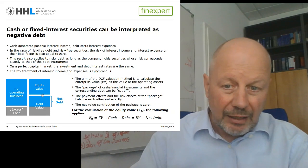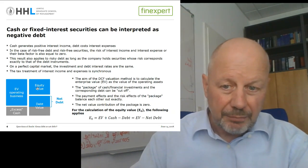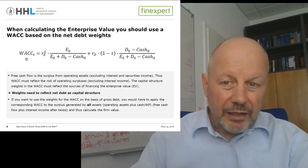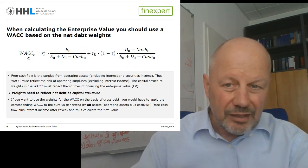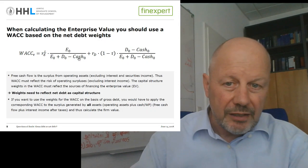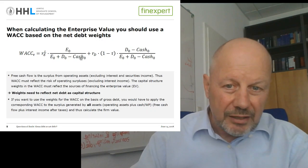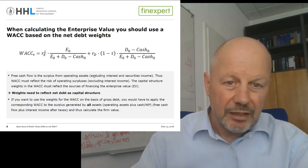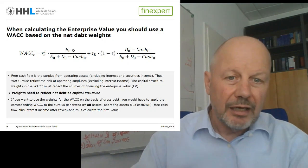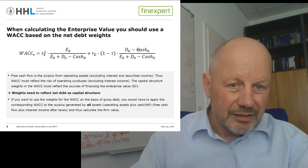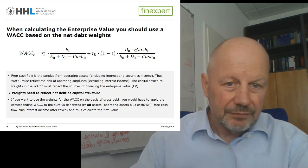So that means that the capital structure we apply on our enterprise value is equity plus net debt. And that already answers the question: if the WACC is supposed to be the correct discount rate for the free cash flow generated by the operating assets of the firm, then these are the weights we should take into account. In the nominator it's the enterprise value — equity plus debt minus cash, so equity plus net debt — and the weight of the debt component is the net debt.